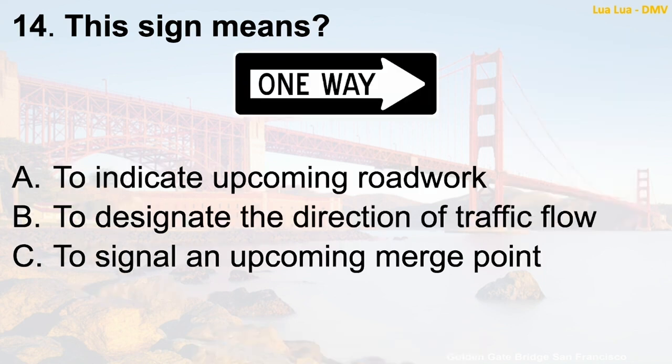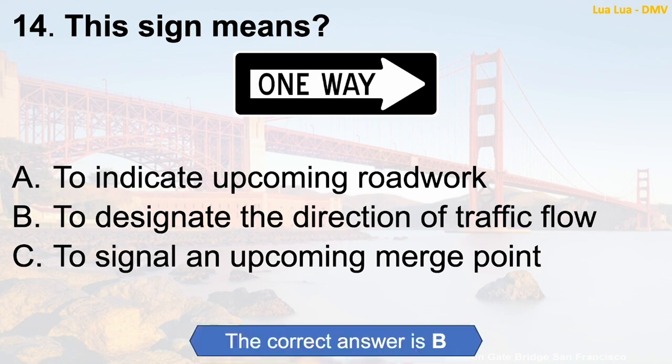Question 14: This sign means — A. To indicate upcoming roadwork. B. To designate the direction of traffic flow. C. To signal an upcoming merge point. The correct answer is B: To designate the direction of traffic flow.